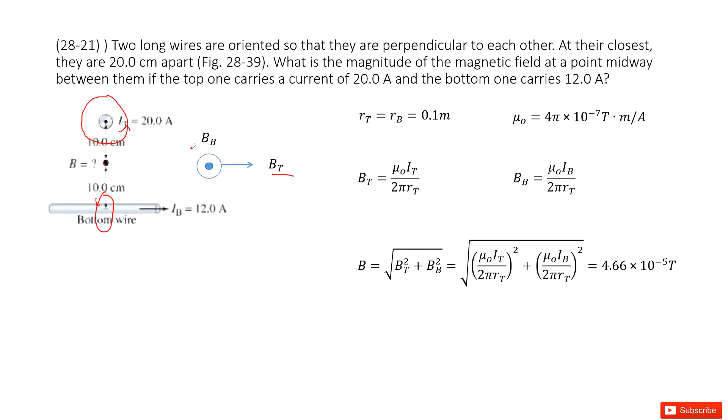As we talked about, BB and BT are perpendicular to each other. The net magnetic field is in this equation. Input all the given quantities, you can get the answer there. Thank you.